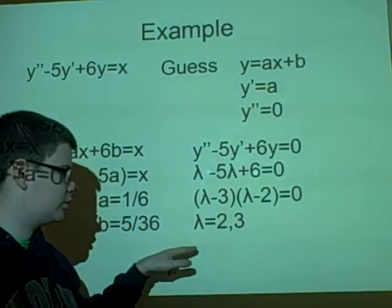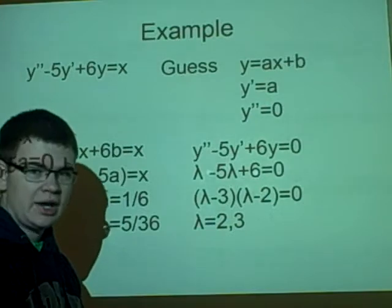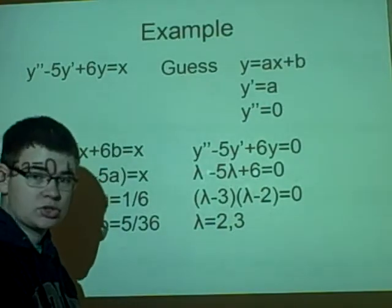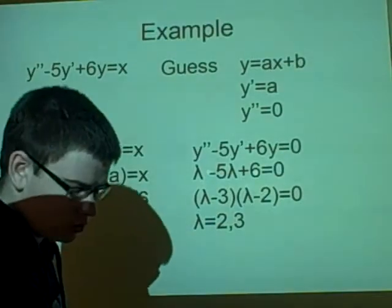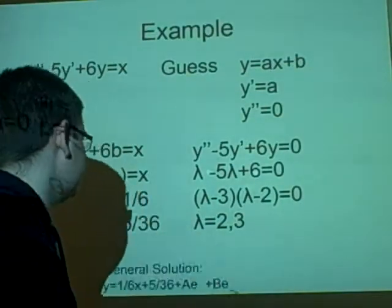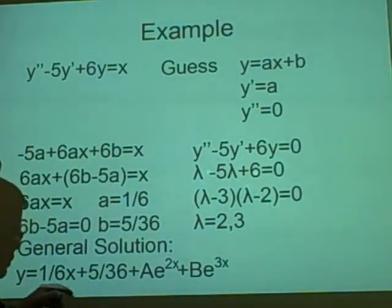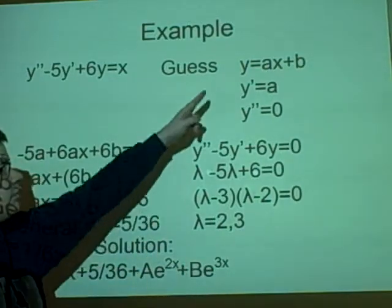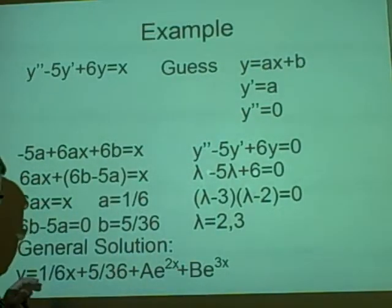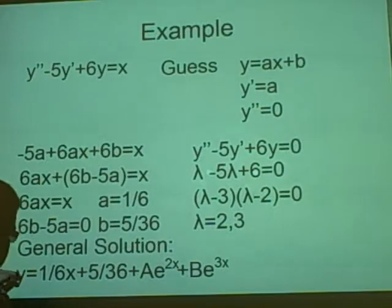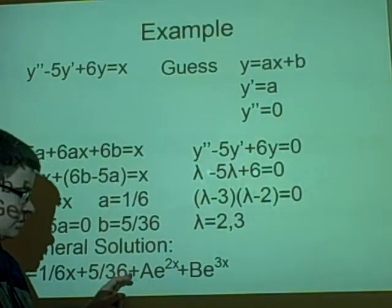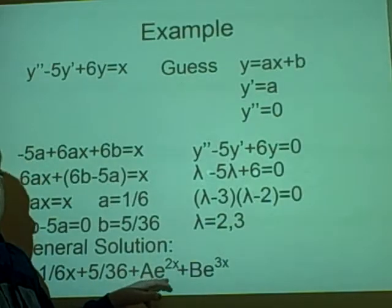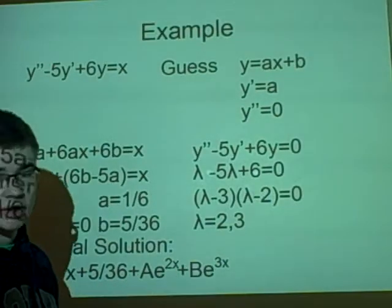So now we can get our general equation, which is adding both of them. We've got y=Ae^(2x)+Be^(3x). So we add both of them together. So this one which we get here, and this one up here. So the general solution is y=(1/6)x+5/36+Ae^(2x)+Be^(3x). And that is our solution.